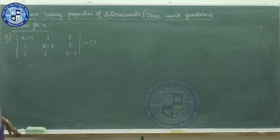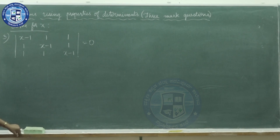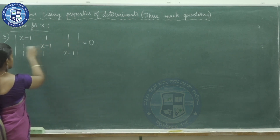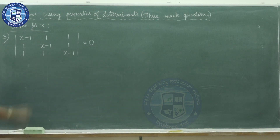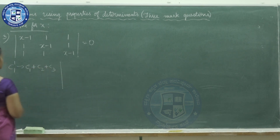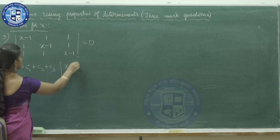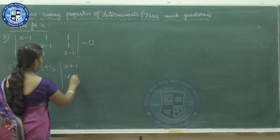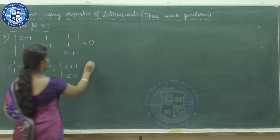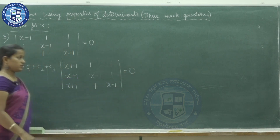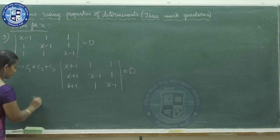Third problem: the determinant is x−1, 1, 1; 1, x−1, 1; 1, 1, x−1 equals 0. If you observe, the numbers in every row and column are the same. So we go for the column operation: column 1 plus column 2 plus column 3. x−1+1+1 = x+1, so the first column becomes x+1 throughout. Then x+1 is common — take it out.